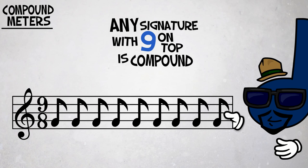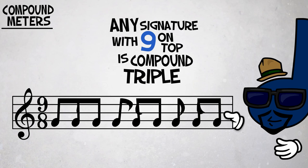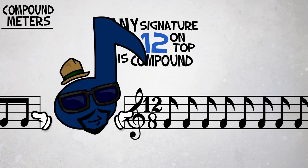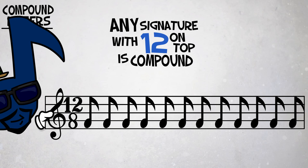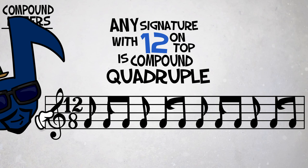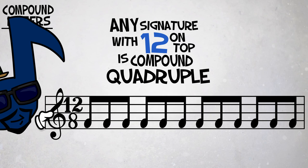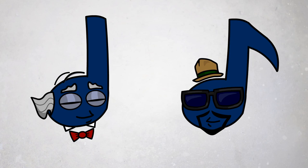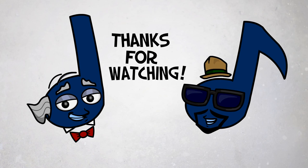Any time signature with nine on top is compound triple. Twelve-eight is compound quadruple.